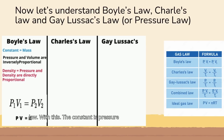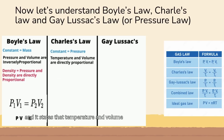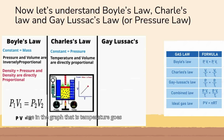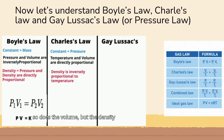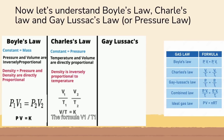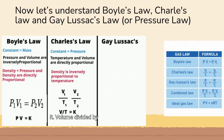Now let's move over to Charles' law. With this, the constant is pressure, and it states that temperature and volume are directly proportional. You can see in the graph that as temperature goes up, so does the volume. Density is inversely proportional to temperature — so as temperature goes up, volume goes up but density goes down. When temperature drops, volume drops and density goes up. The formula is V1 over T1 equals V2 over T2, where V is volume and T is temperature, or volume divided by temperature equals K, the proportionality constant.